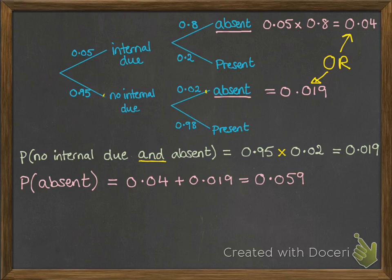So we get the total probability of him being absent is 0.059. That means that on any random day that we pick, the chances of him being absent is that 0.059.